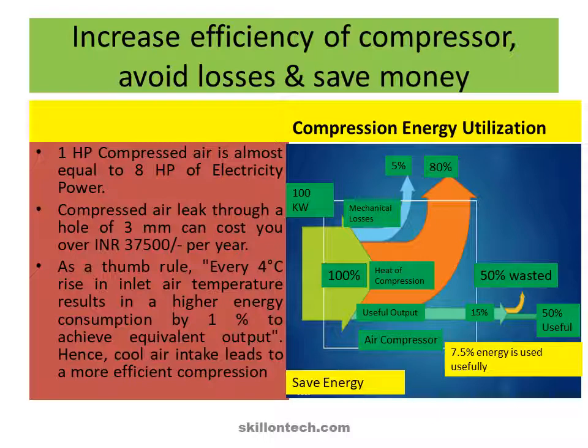If we give 100 kW of electrical energy, then out of 100% input, heat of compression is almost 80% and mechanical losses are 5%. The balance 15% is useful output. Out of that 15%, 50% is wasted in unwanted use or wastage of compressed air, and only 50% is used. The energy actually used against compression is only 7.5%. Therefore, we must save energy.